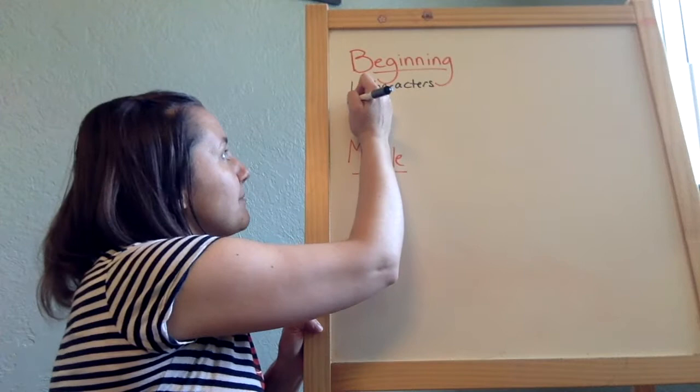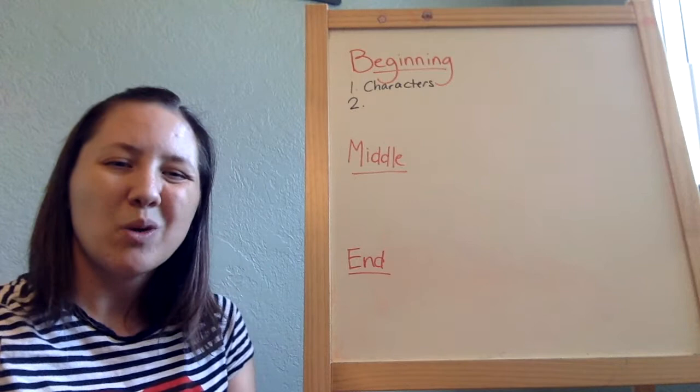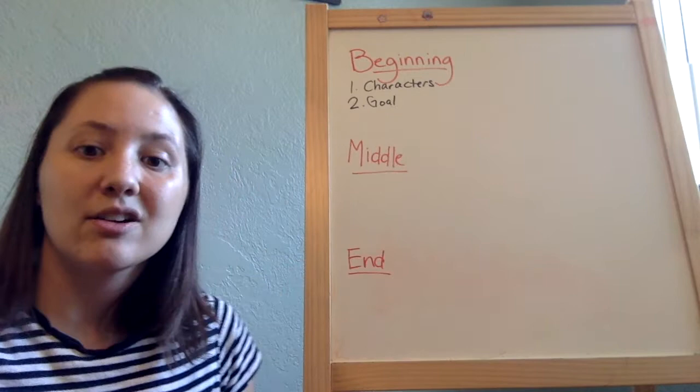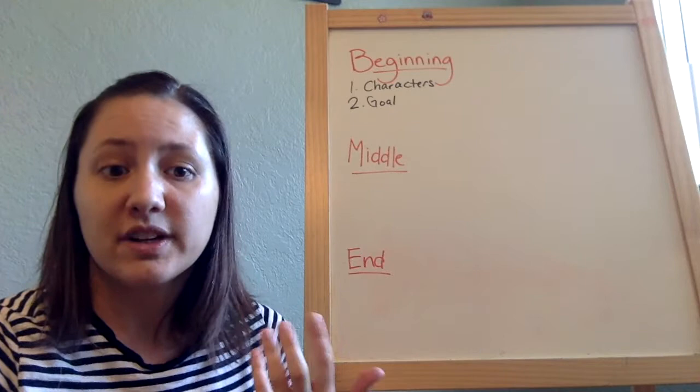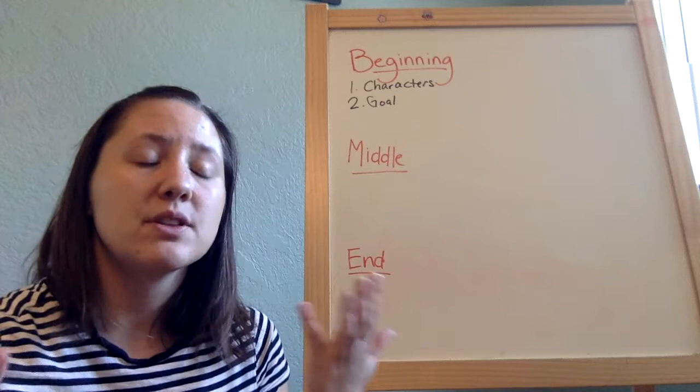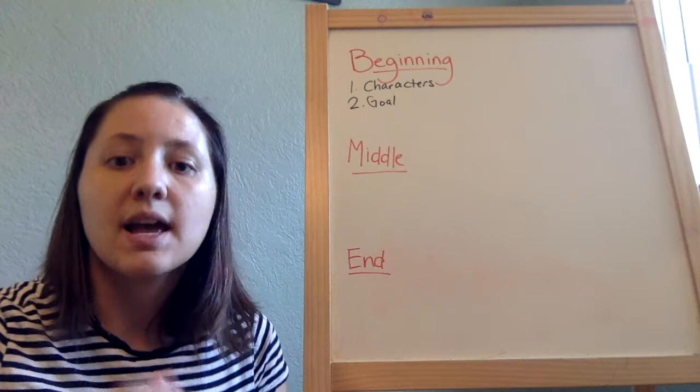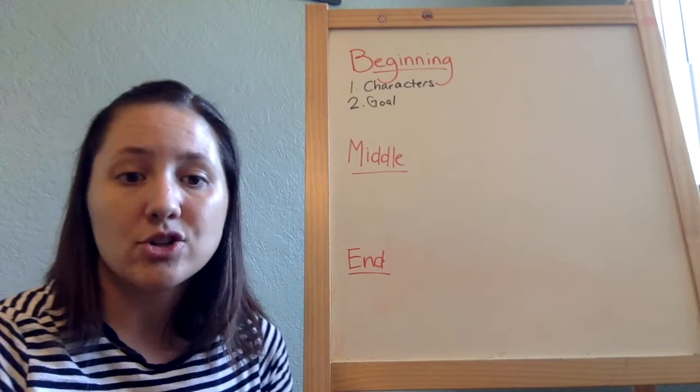The second thing we learn — which you may have guessed from the characters discussion — is what the main character wants. In writing, we call this the main character's goal. In Don't Let the Pigeon Drive the Bus the goal is to drive the bus; in If You Give a Mouse a Cookie, the goal is to get a cookie. Every story starts with a main character and the goal they are trying to achieve.